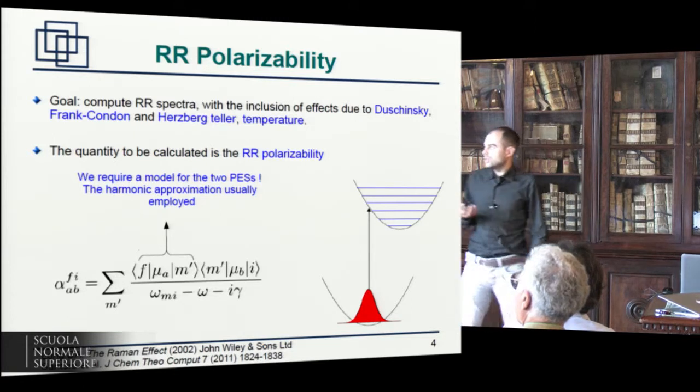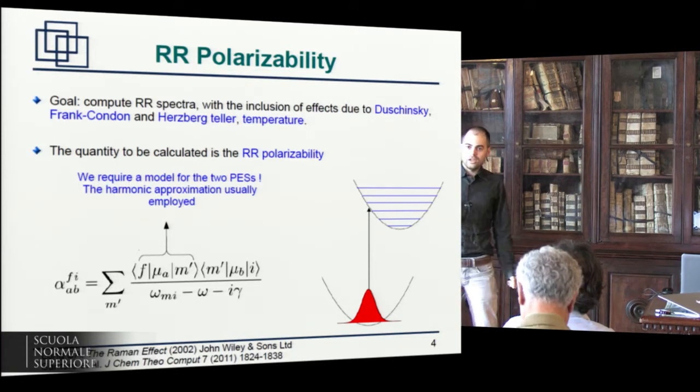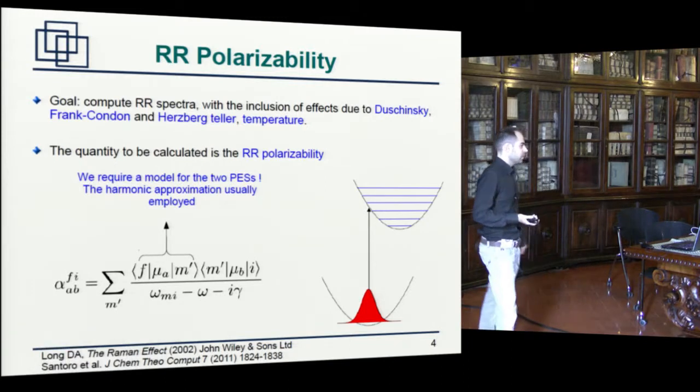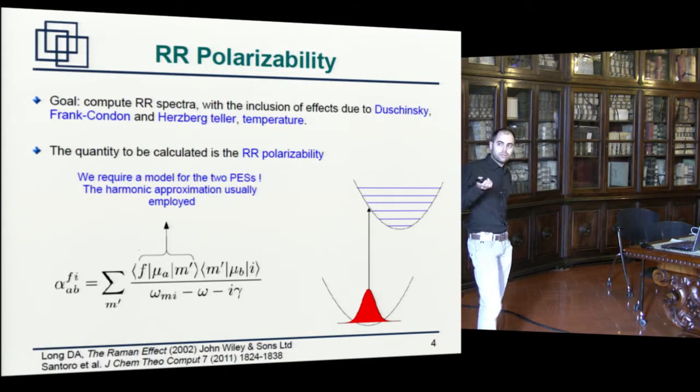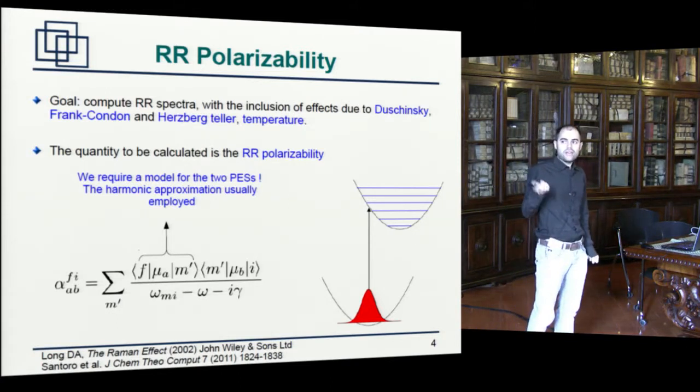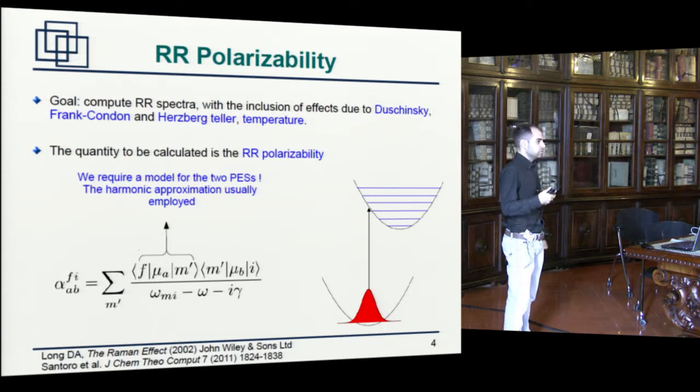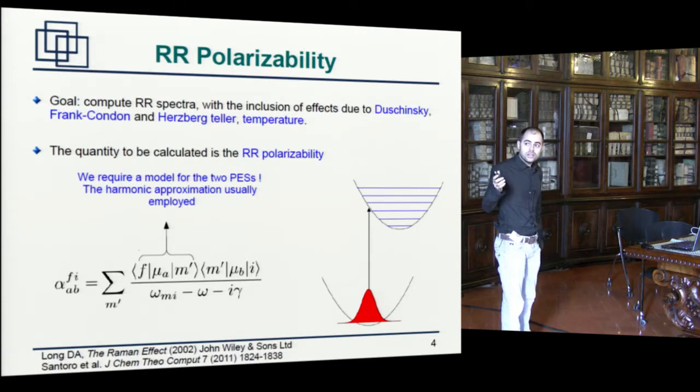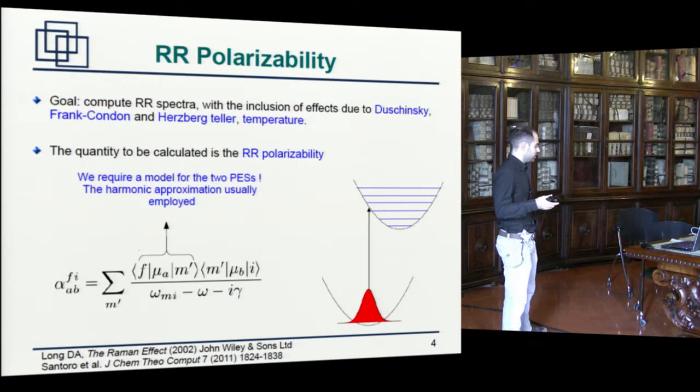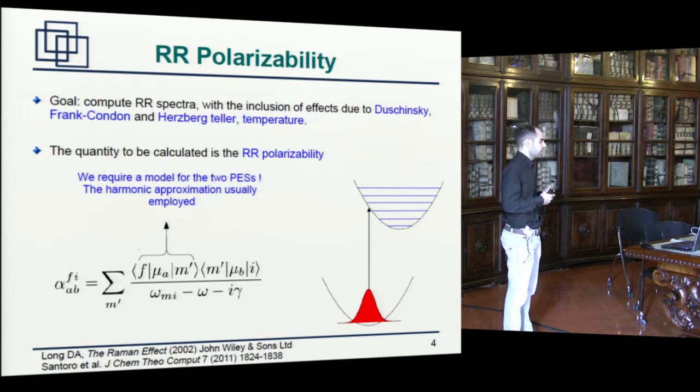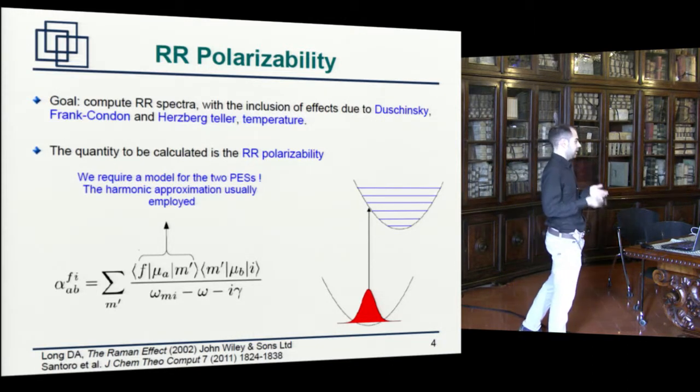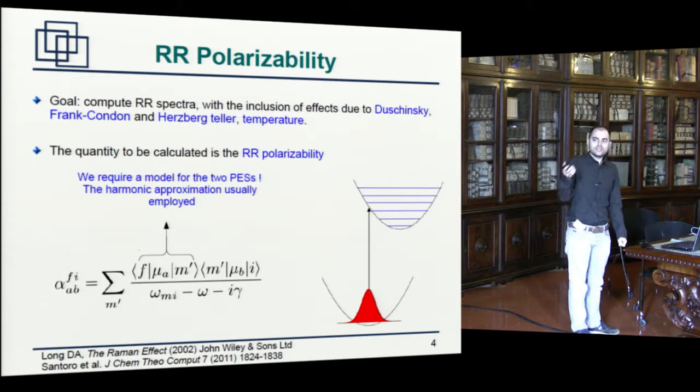What do I need to actually compute the spectrum? To compute the Raman spectrum, I need the Raman polarizability that is known. And the expression for the Resonance Raman polarizability is written over here. I have the initial and final states, vibrational states I and F. I have a summation which runs over all vibrational states belonging to the excited potential energy surface, M prime. And in the formula, I also see the vibrational energies of the states, the incidence frequency omega, where N gamma is a damping factor, and I have the transition dipole moments for the electronic transition. So I just have to do the summation.